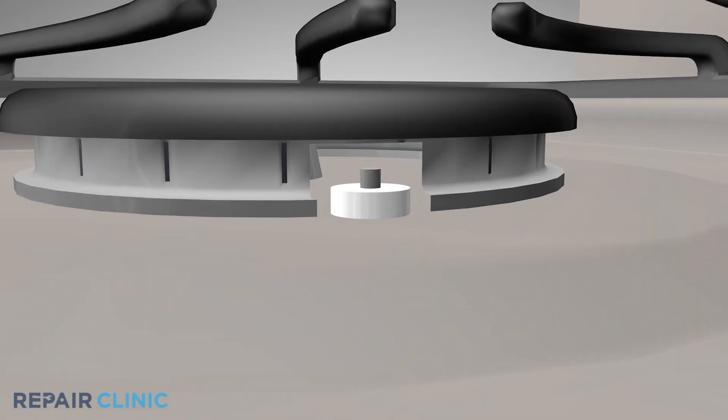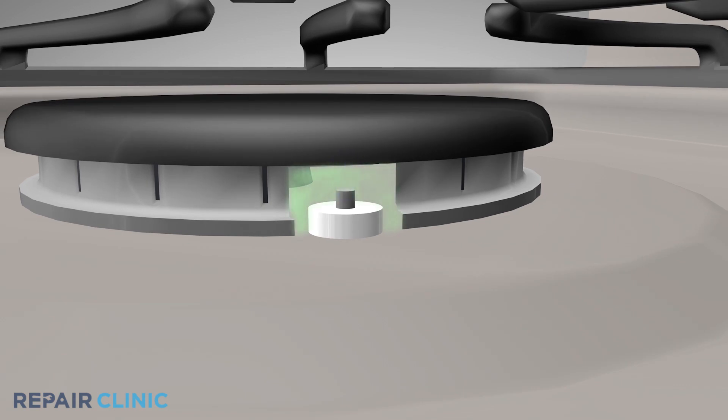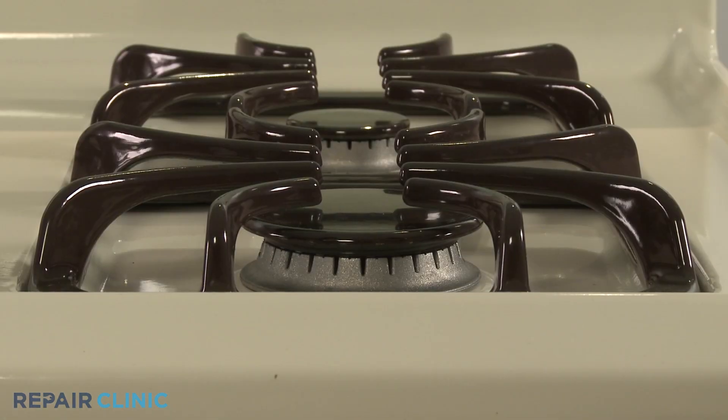The pulses cause a spark to occur between the electrode and the grounded burner cap. The gas and air mixture at the burner head is ignited by the spark, and a blue flame with an occasional yellow tip is produced.